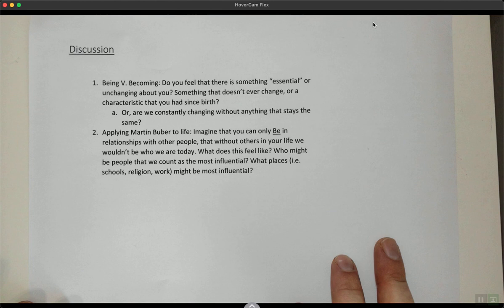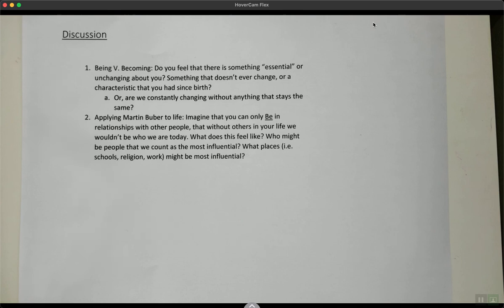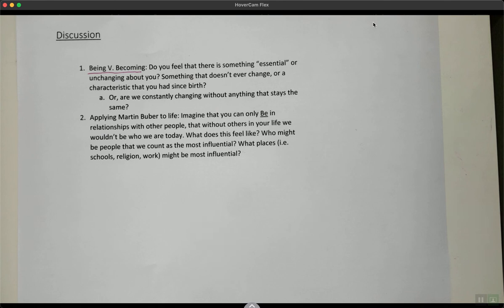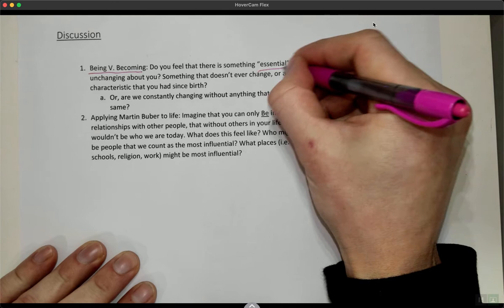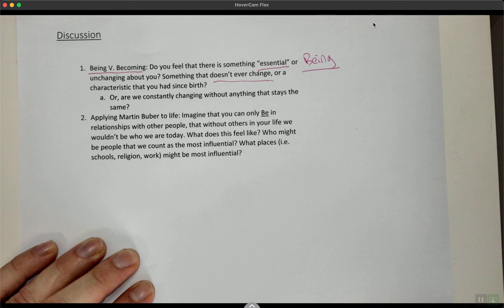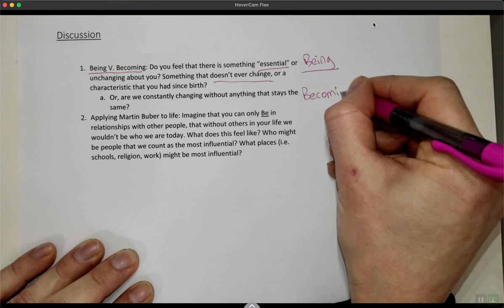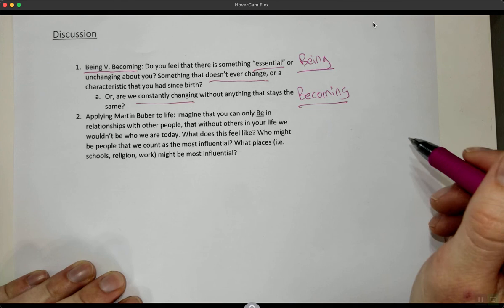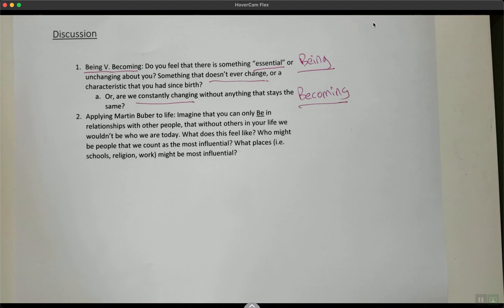So he breaks it down in separate portions: nature, each other, and spiritual. Rethinking these relations that we have in all aspects of our life to go away from the I-it object relationship to the I-thou relational relationship. Finally, moving along into the last section, our discussion questions for us to be thinking about. There's two discussion prompts here. The first one: being versus becoming. Does this seem strange to you? Is this something that makes sense to you, this idea of being versus becoming? Do you feel that there's something essential or unchanging about you? Do you tend to feel more in this being sense? There's nothing wrong with this because this is often how we view the world. Is there something about you that doesn't ever change, or a characteristic you've had since birth?